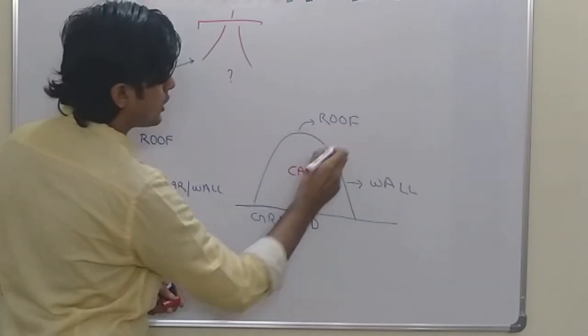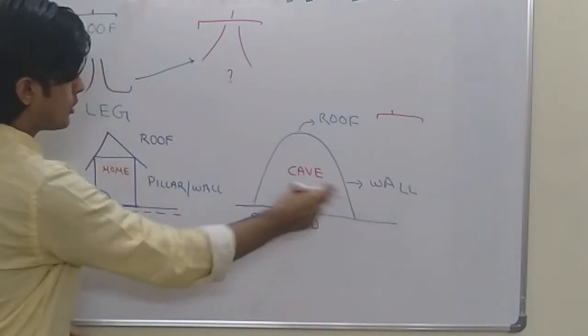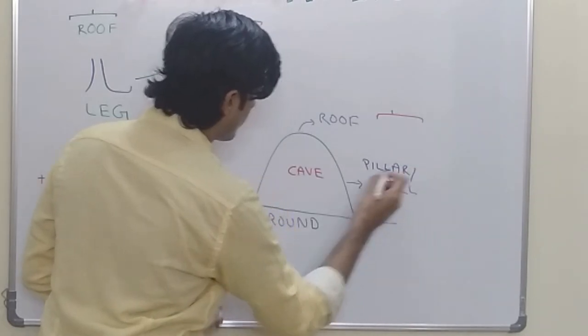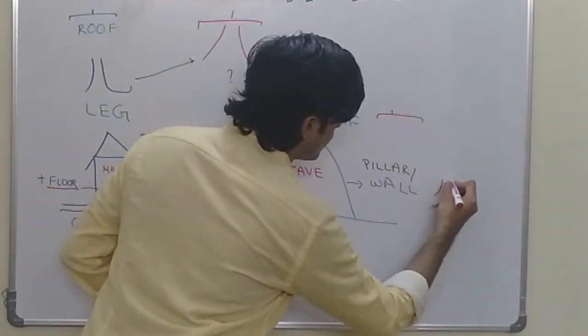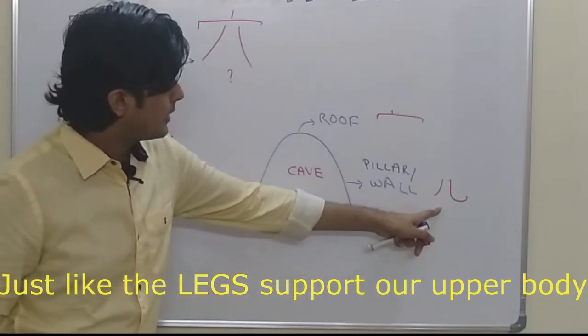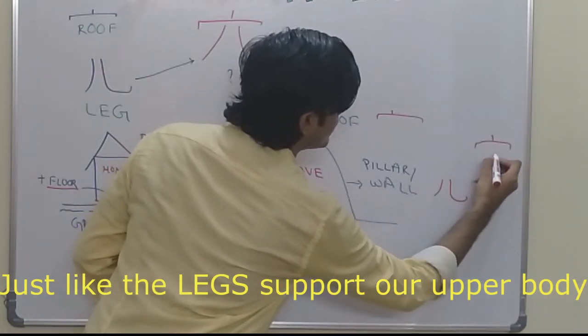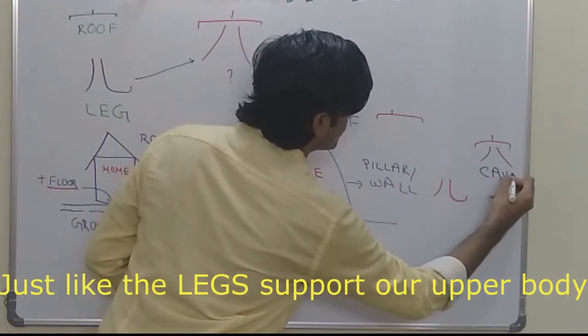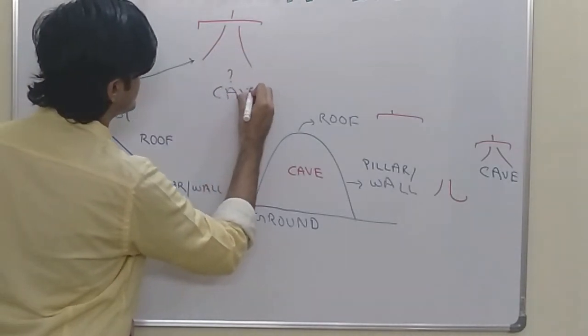Now I associated this roof with this radical and I associated this wall and this pillar with this radical, the leg support, as the legs support our body. So in this way this wall and pillar is symbolized by this leg. So if I conjugate it together, then this should give the meaning of cave. And that's how I remembered this kanji as the meaning of cave.